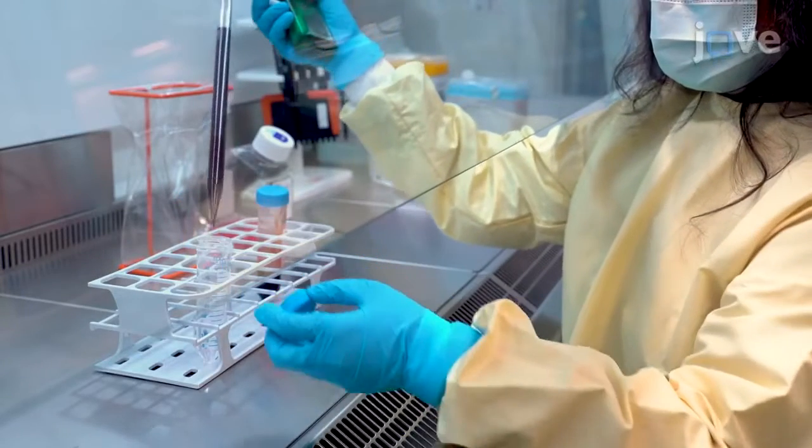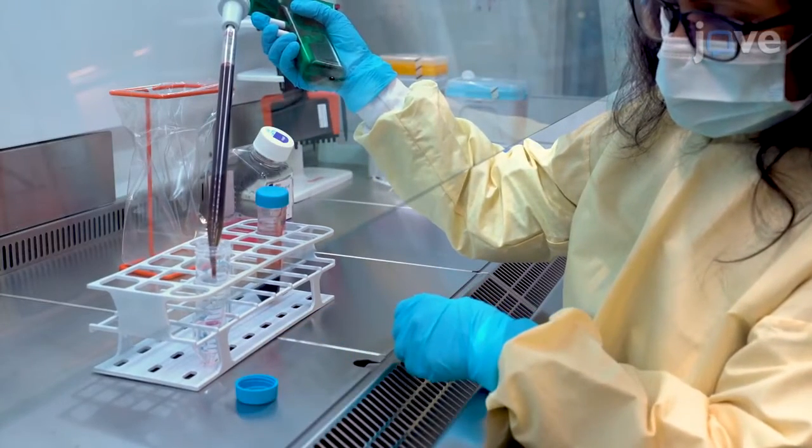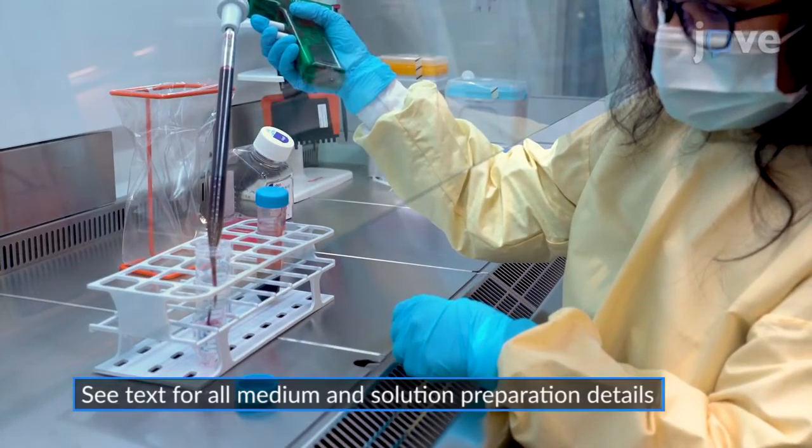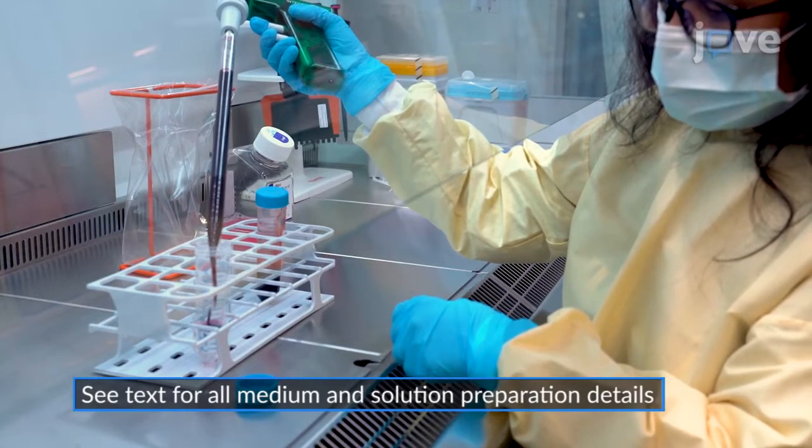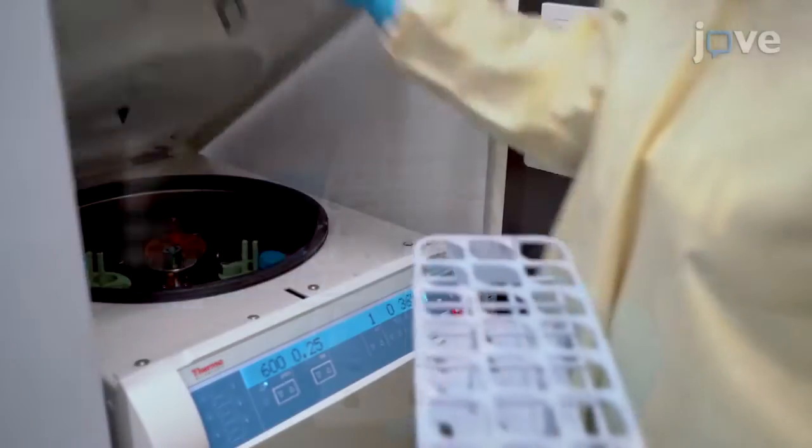To isolate PBMC from human donor Buffy coats, use a pipette to slowly overlay 15 milliliters of Buffy coat blood down the side of a 50 milliliter tube onto 15 milliliters of density gradient medium and separate the cells by centrifugation.